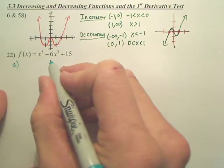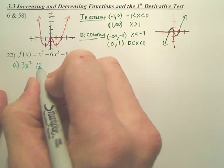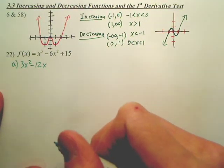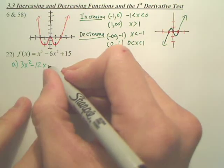Well, luckily, very easy derivative. 3x squared minus 12x. You like those, don't you? What do we do with that to find critical numbers? You set it equal to 0.